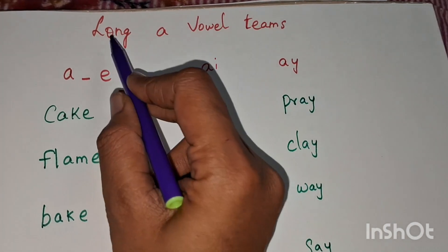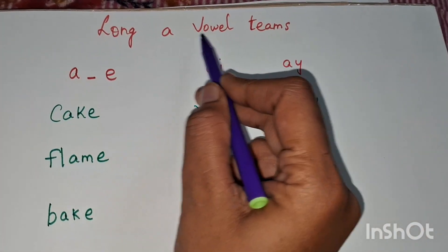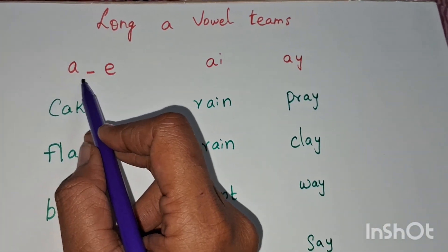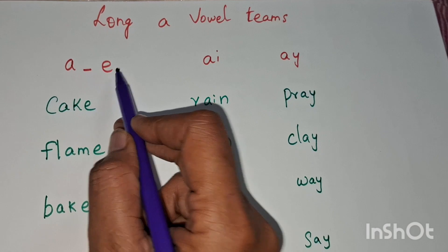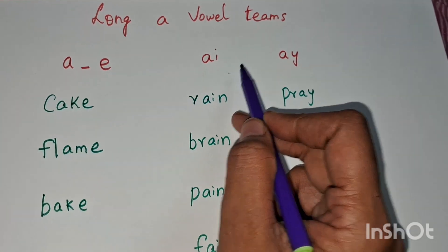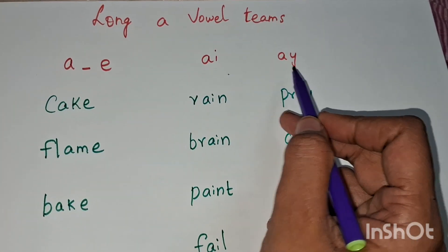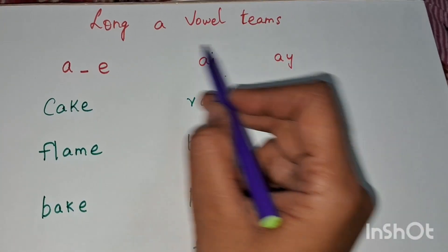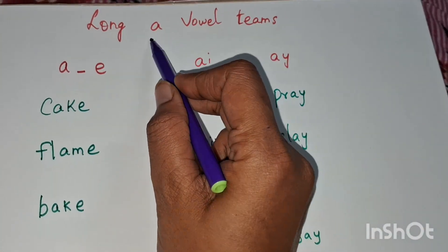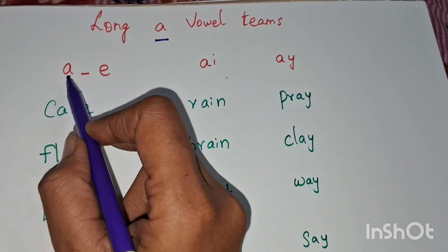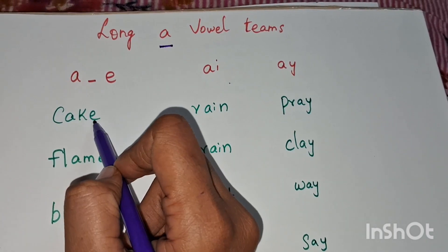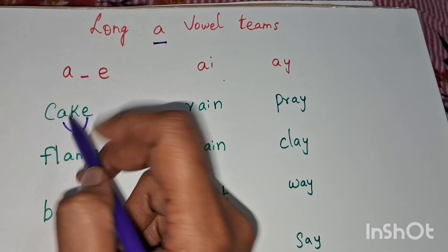Hello everyone. Long A vowel themes. These three: A-E, A-I, and A-Y. These three are the same sound: A. This is magic E.